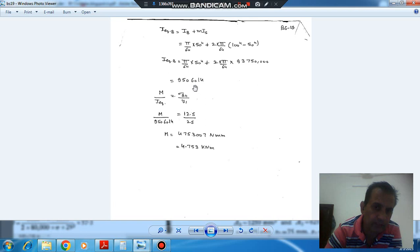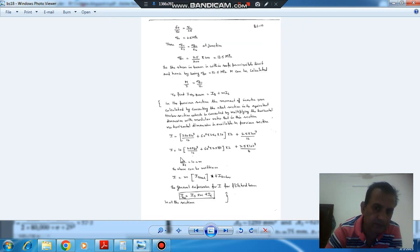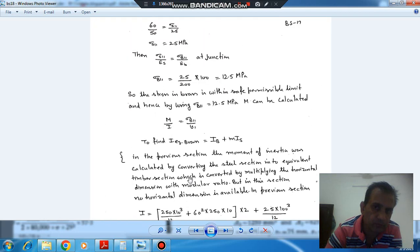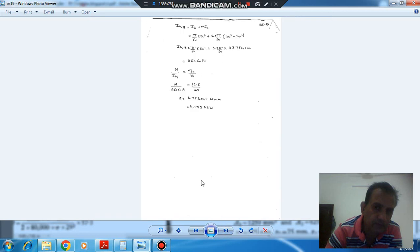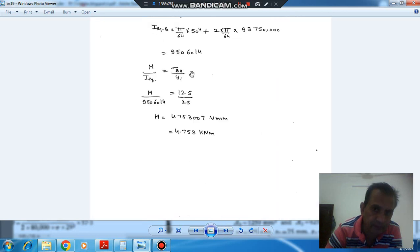For equivalent brass and modular ratio. And the maximum stress occurring in the brass is at 1-1. So that is 12.5 MPa. And we can take this as 12.5, and y is at the outer surface of the brass, at a distance 25 mm from the axis, and I is equivalent.